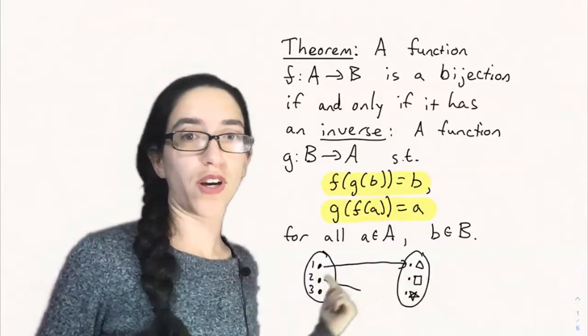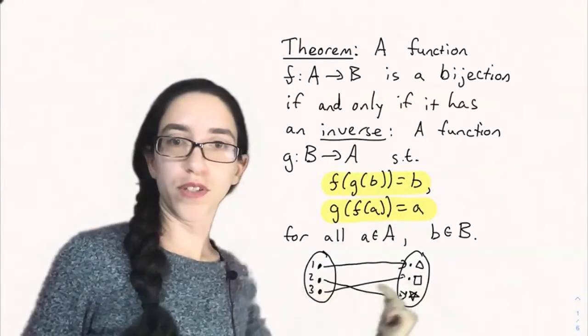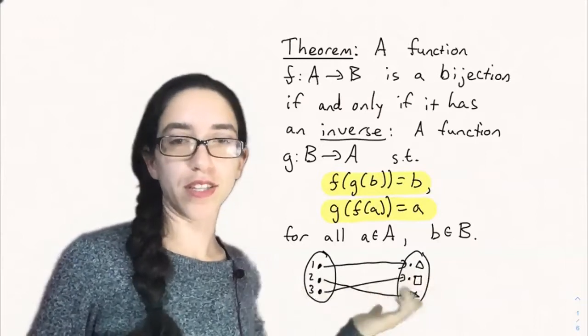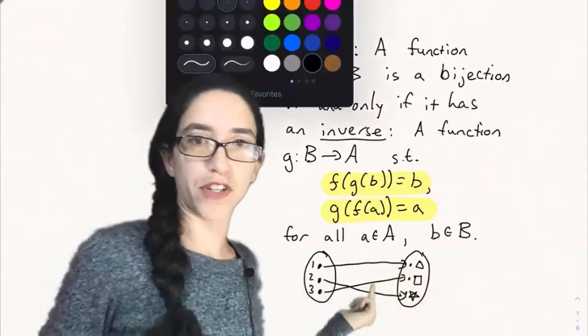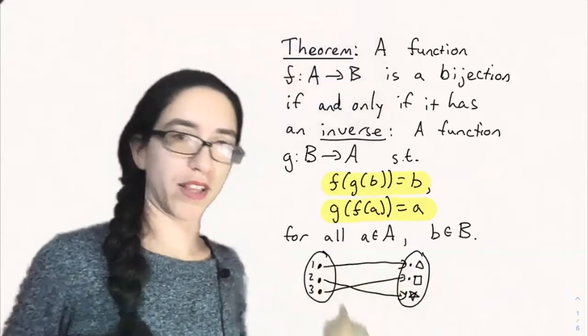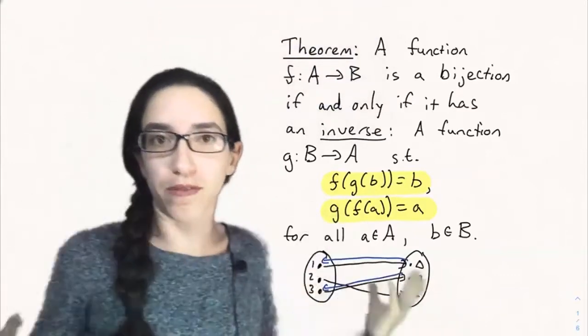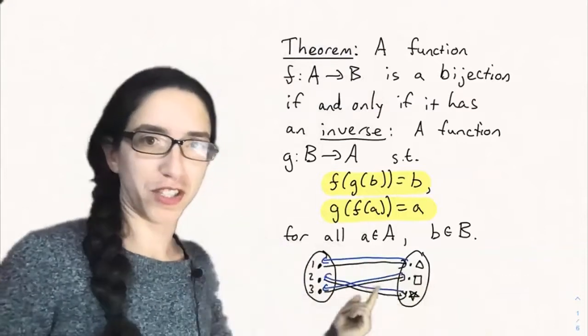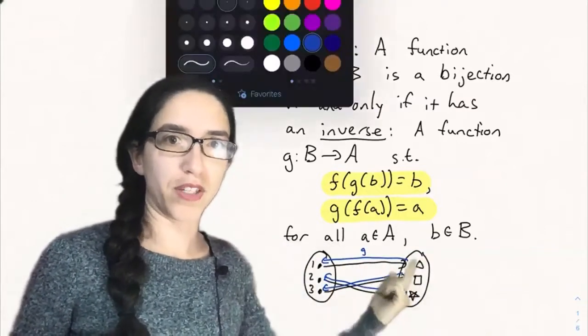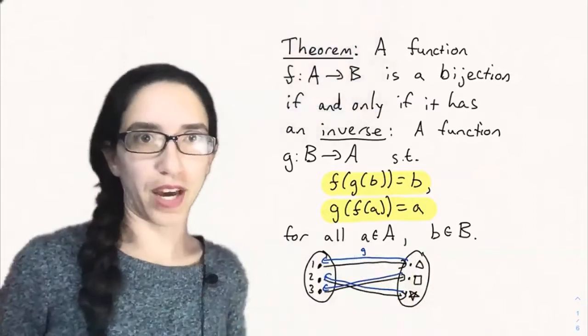What that means is that if you draw it as a diagram of arrows for these finite sets, the inverse is just given by reversing arrows and making them go backwards. And so that's how you can think of the inverse function. It's going to be a function because it's a bijection and so all these points have exactly one arrow coming into them so they have exactly one arrow coming out of them.